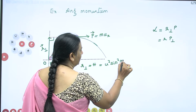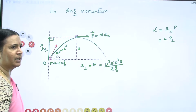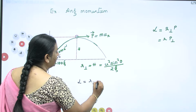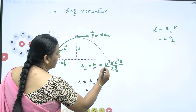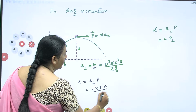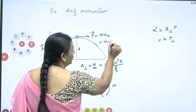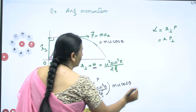All the data are available for you. So the angular momentum becomes: L = R_perpendicular × P = (u² sin²θ / 2g) × M × uₓ, which is nothing but M × u × cosθ. You can simplify this further yourself.